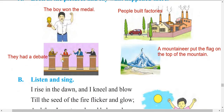In the third picture, you can see people pointing to each other — they had a debate. And in the last picture, you can see a mountain, a flag, and a man. A mountaineer put the flag on the top of the mountain.